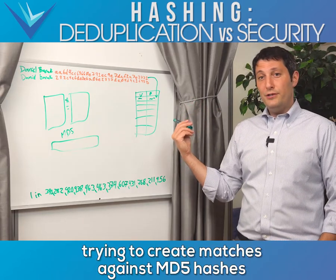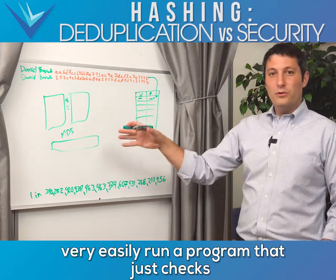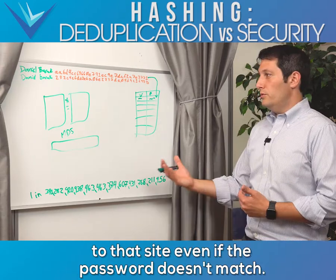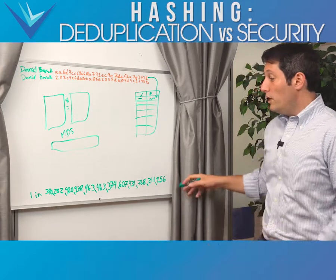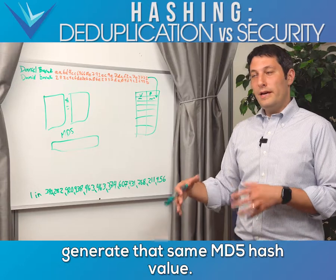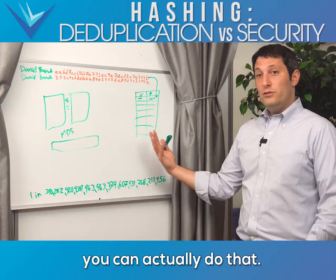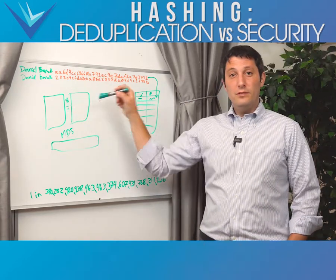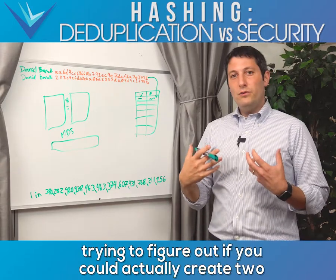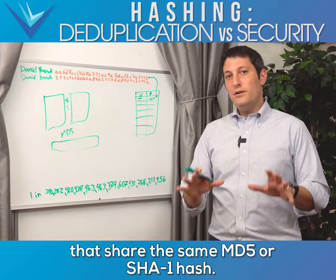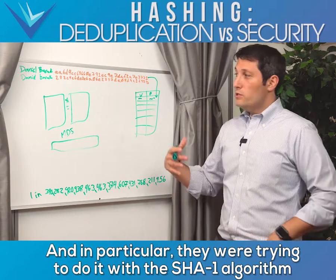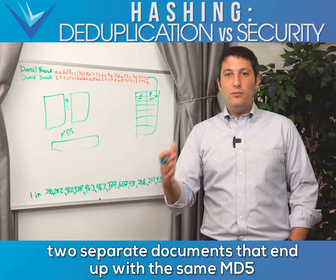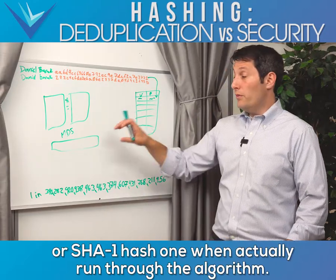When brute-forcing and trying to create matches against MD5 hashes for security purposes, you can run a program that checks millions of different password variations against different hash values, trying to find a collision. Once you find that collision, you can log into the site even if the password doesn't match — it could be a different password that generates the same MD5 hash. In the research space, they wanted to see if they could intentionally create two separate documents that share the same MD5 or SHA-1 hash, and they focused particularly on the SHA-1 algorithm.